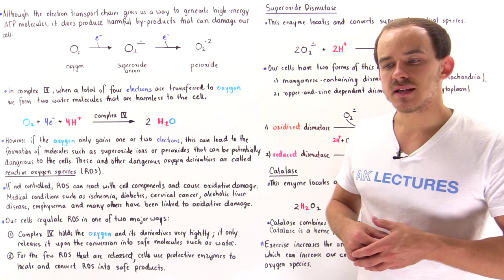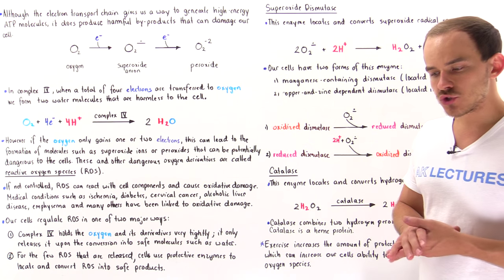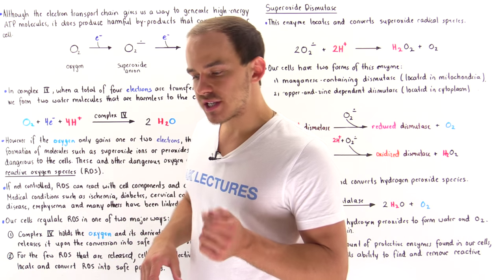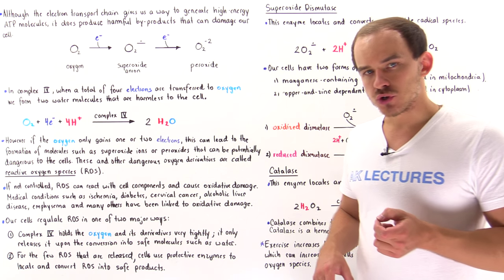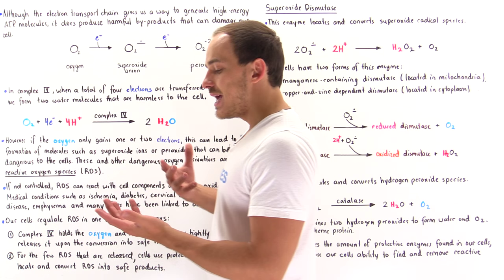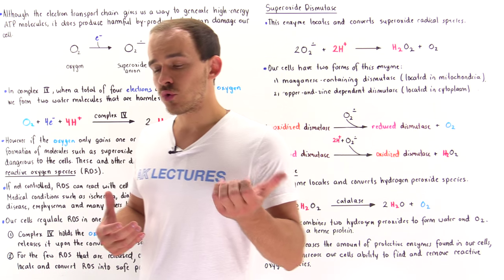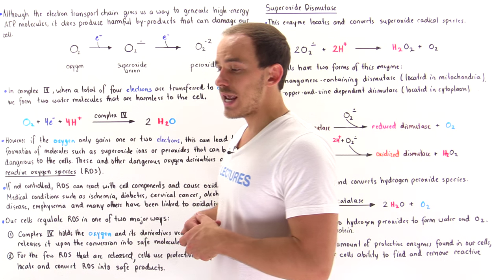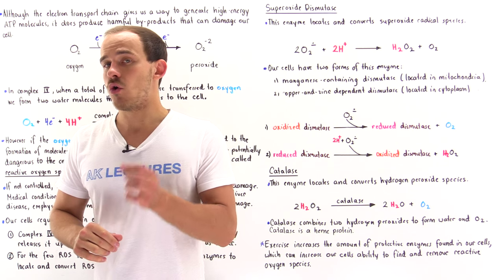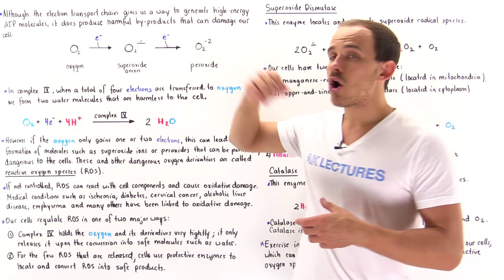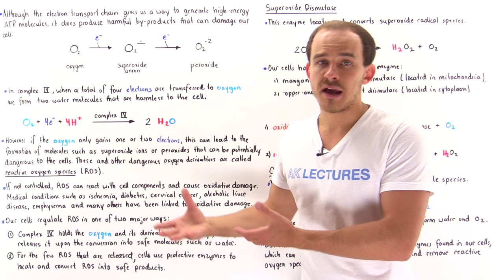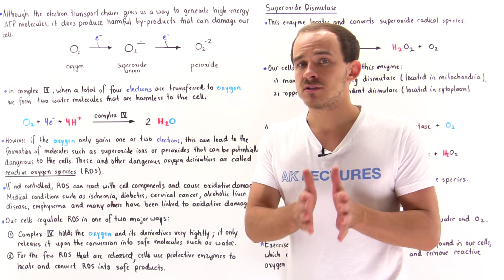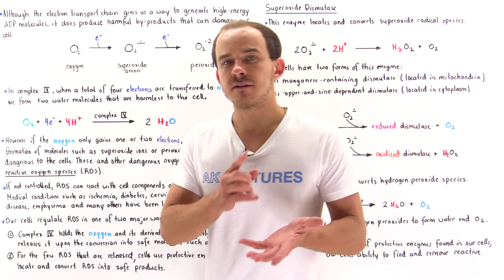Many of the processes that take place inside our cells and generally in nature sometimes have negative effects, and the electron transport chain is no exception. Even though the electron transport chain is very useful because it allows us to establish a proton gradient across the inner mitochondrial membrane to generate high-energy ATP molecules, it also sometimes produces harmful byproduct molecules that can damage our cells. Because these harmful byproducts are oxygen derivative molecules, we call them reactive oxygen species.